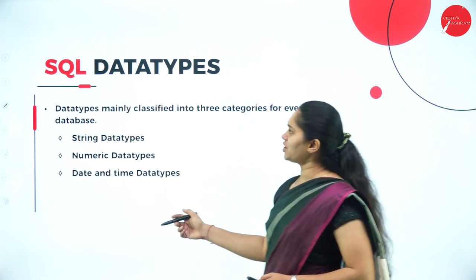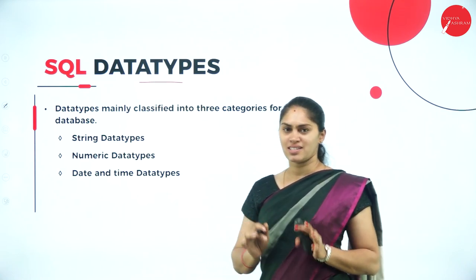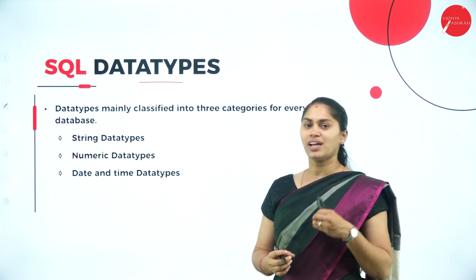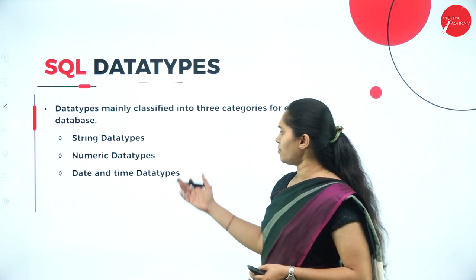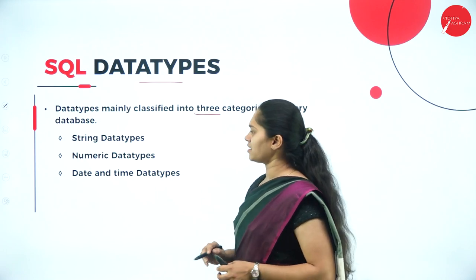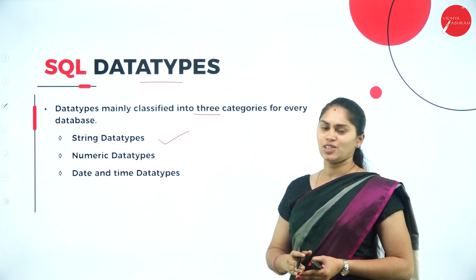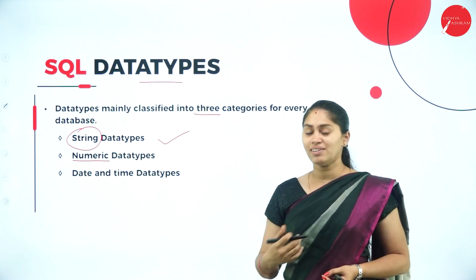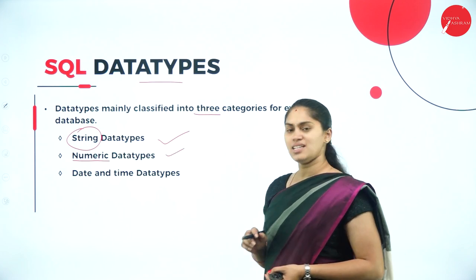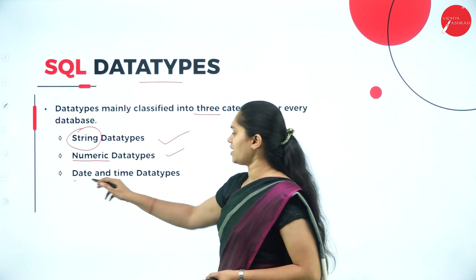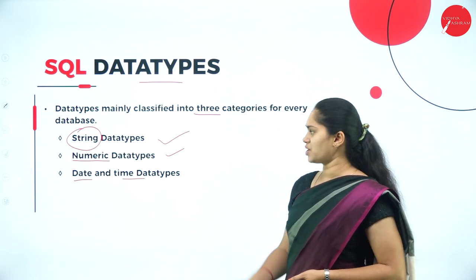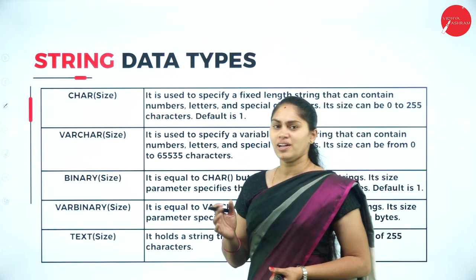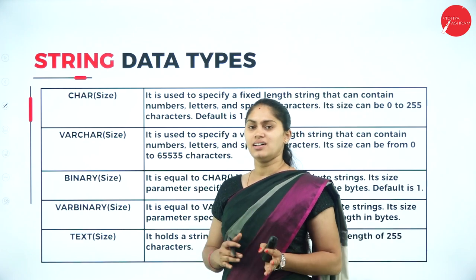Next we have SQL data types. We need to learn about the types of data SQL can hold. SQL data types are classified into three categories: string data type, numeric data type, and date and time data types. We'll first look at string data types, which are all related to characters and sets of characters.